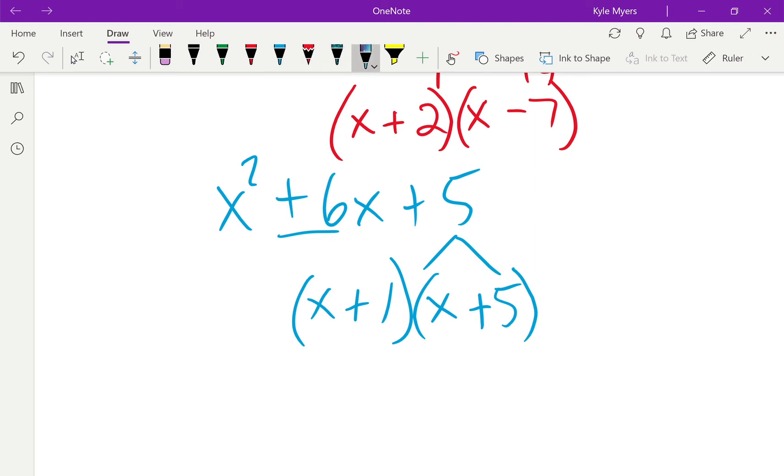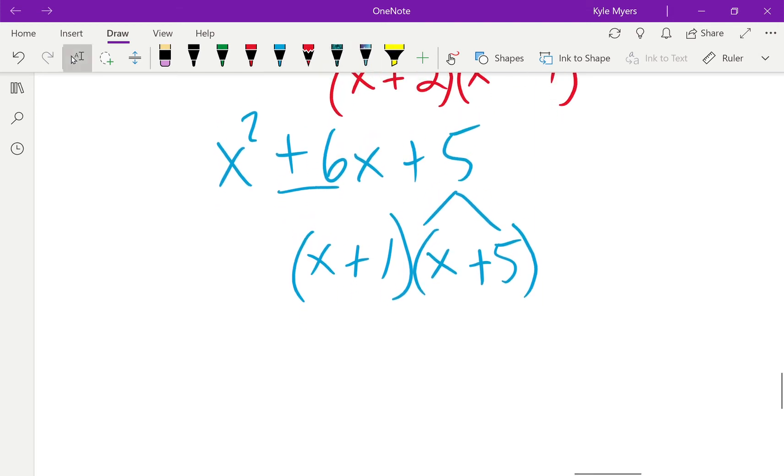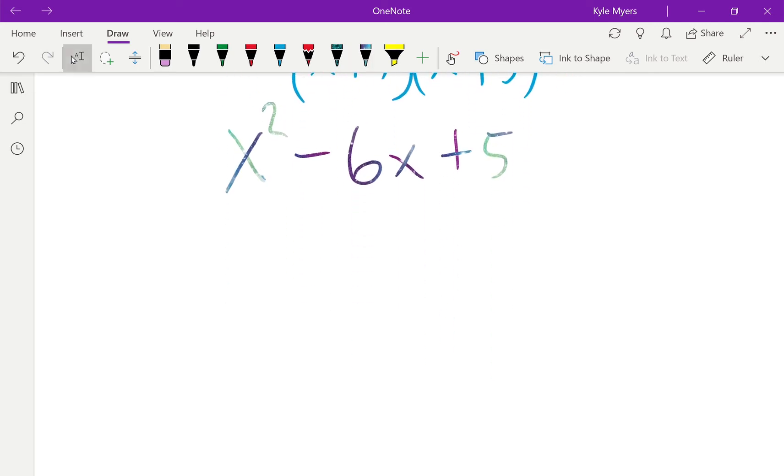For the last one, I'm going to do the same thing but with a minus sign, so minus 6x plus 5. Same thing is going to happen here. I want to have a 1 and a 5, but this time I need there to be a minus.